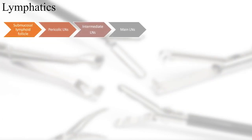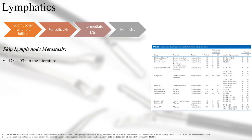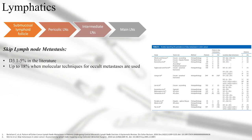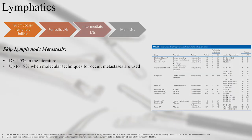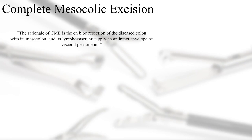Colonic cancer lymphatic spread was thought to be a linear process where cancer cells would migrate sequentially through the regional lymphatic bed from the submucosal lymphoid follicles towards the main leaf nodes. However, we now know that we can have skip metastasis where distant lymph nodes are affected without involvement of those more proximal. Skip metastasis of the main lymph nodes can occur up to 5%, mainly in T3 and T4 advanced tumors. A study assessing lymph nodes using molecular techniques, which allows for detection of occult metastasis, found presence of malignant cells in much higher rates. The rationale of complete mesocolic excision is the en-bloc resection of the diseased colon with its mesocolon and lymphovascular supply in an intact envelope of visceral peritoneum.